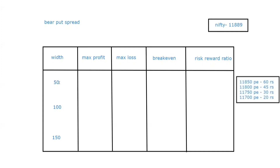The first example is a width of 50. We have done spreads using a 50-point width in previous modules. Now we will compare it with a 100-point and a 150-point width. The first example: we are buying the 11,850 put and selling the 11,800 put — buying higher, selling lower, which is a bear put spread. The width here is 50. The 11,850 put is trading at a premium of 60, and the 11,800 put is trading at 45. We are giving 60 rupees and receiving 45 rupees, so the net debit is 15.